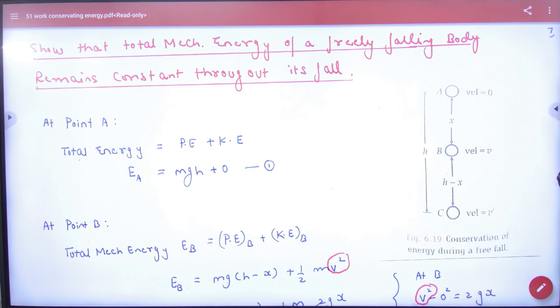The body dropped from h height. What is the initial velocity? Zero. So what is the velocity in the road? V. And what will be on the ground? V prime. What is the total height? H. So if this is h, what is this? x. This is h minus x.